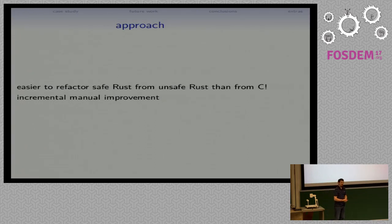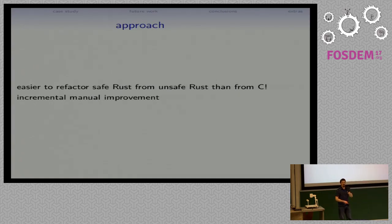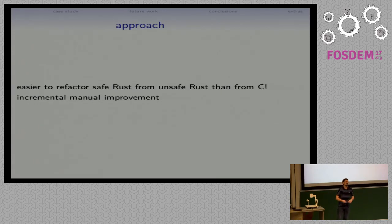That is a much smaller amount of work that you have to do by hand than what people are doing today. The whole point of this is to enable incremental manual improvement. The fun way to do this is: run Corrode, get a giant pile of Rust, and then say, 'this one function has been pissing me off for years — I am so excited that I finally get to rewrite it.' Or maybe you want to pick the most safety-critical function. Whatever approach you want to take, you can do it incrementally by using Corrode.